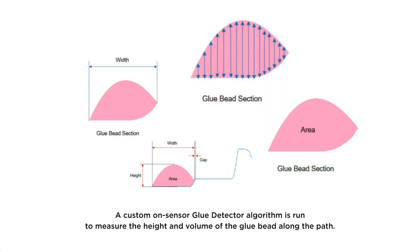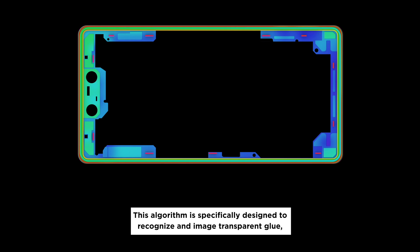A custom on-sensor glue detector algorithm is run to measure the height and volume of the glue bead along the path. This algorithm is specifically designed to recognize and image transparent glue and can also be applied to any other glue type or color.